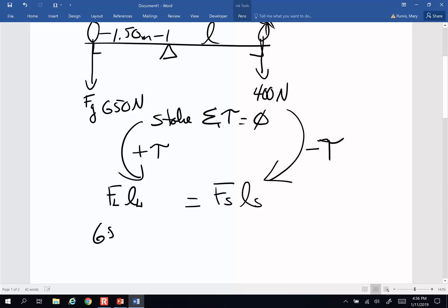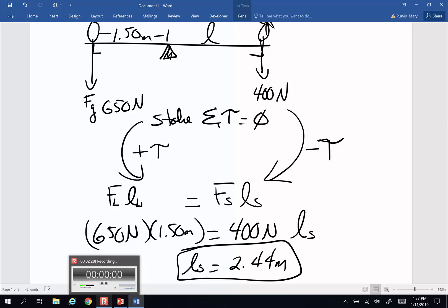Lula is 650 newtons, 1.50 meters is her lever arm from that pivot point. Stephanie is 400 newtons. The lever arm of Stephanie is what we don't know. And when I do the math, I ended up with a lever arm for Stephanie of 2.44 meters. These are delightfully simple, not too complicated problems.